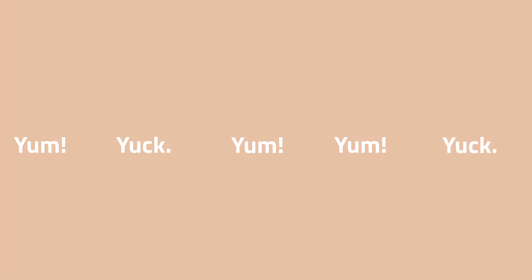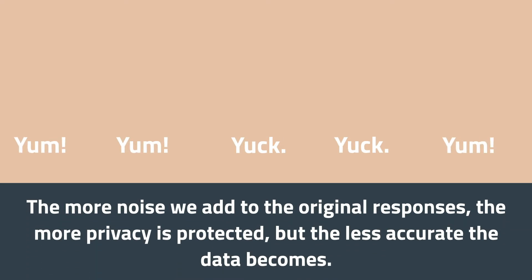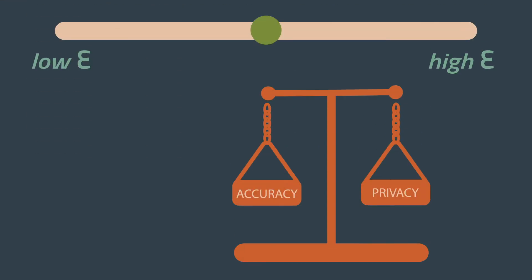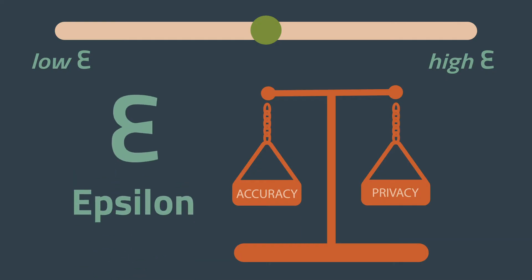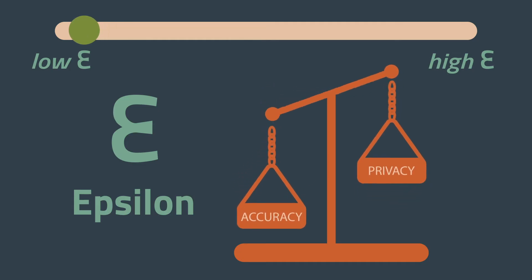There's a trade-off with differential privacy. The more noise we add to the original responses, the more privacy is protected, but the less accurate the data becomes. Researchers use a measure called epsilon to determine the relative levels of privacy and accuracy. A lower epsilon means lower accuracy, but higher privacy.